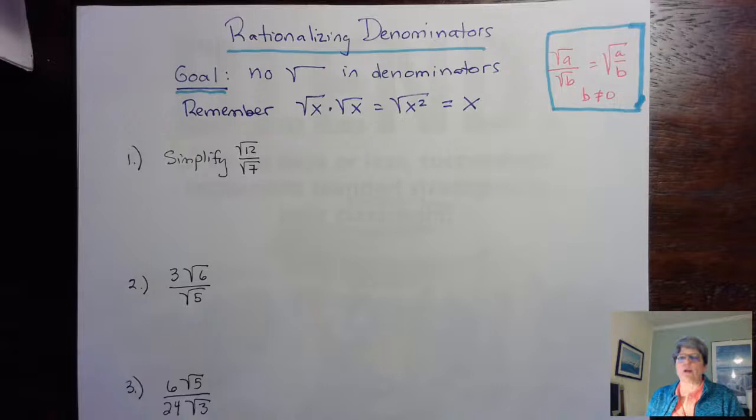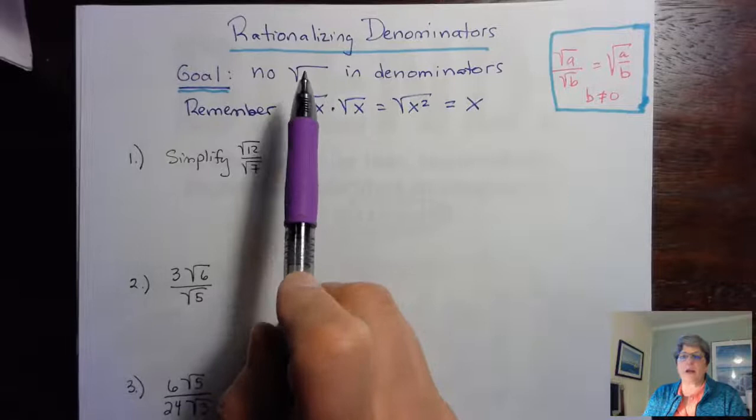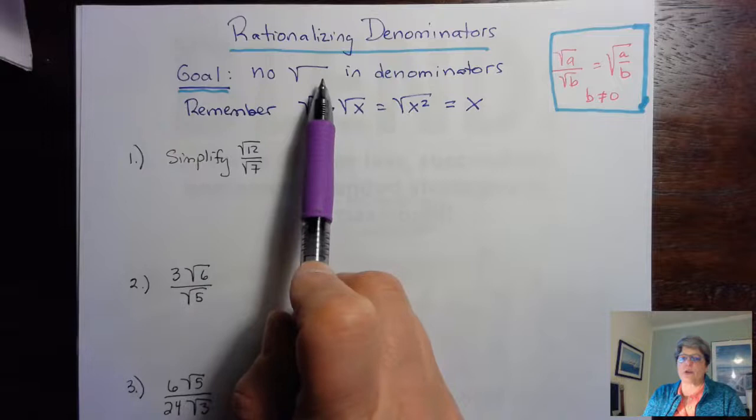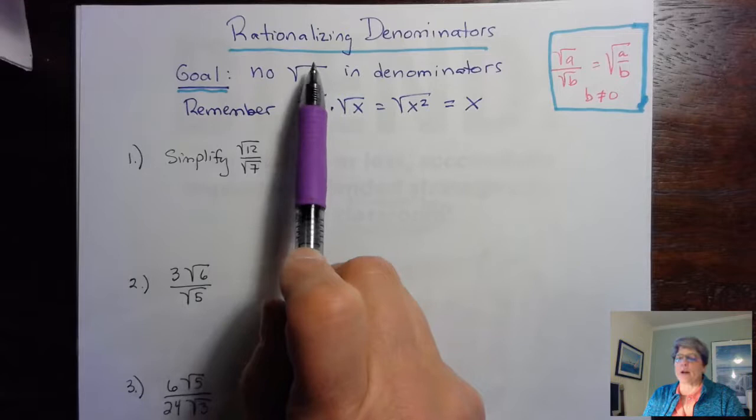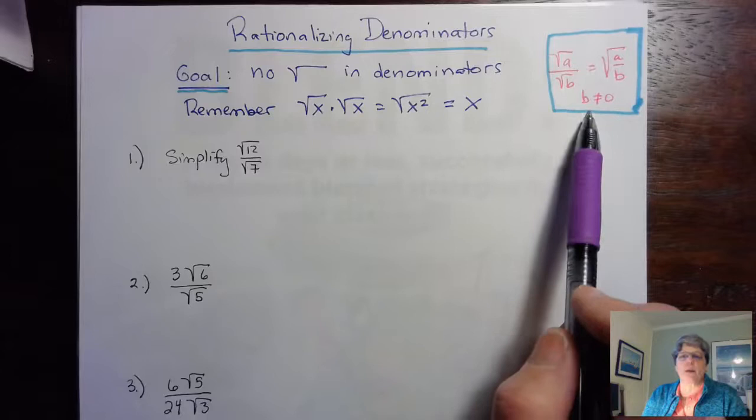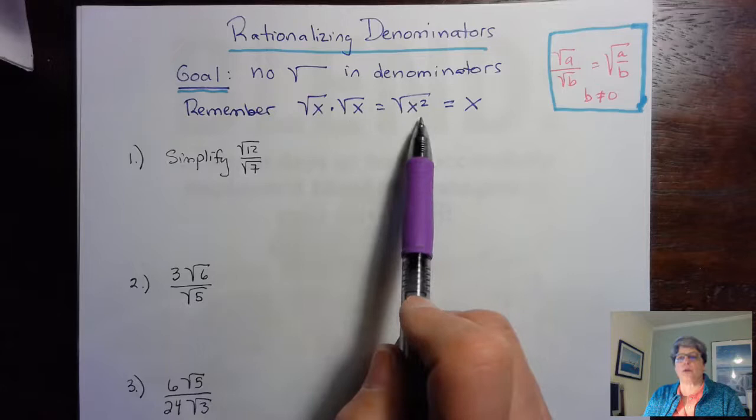In part two of this video, we are going to rationalize the denominators. The goal when we rationalize is to get any roots out of the denominators, because to have a radical expression completely simplified, there are supposed to be no roots in the denominator. We're going to use the rule from previously about dividing radicals, and remember that a square root times itself is the square root of x squared, which is x.